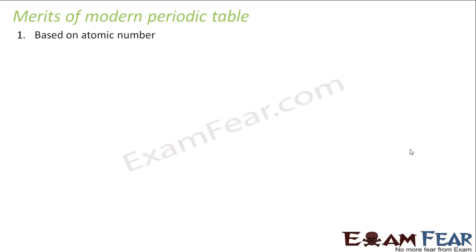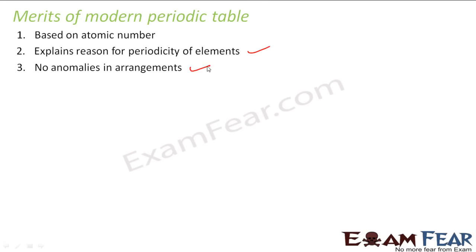There are some merits of modern periodic table. The first thing is it is based on atomic number. The second thing is it explains the reason for periodicity of the elements. The third thing is there is no anomaly in the arrangement as we have seen in the earlier periodic tables and the newly discovered elements could easily be accommodated in this.